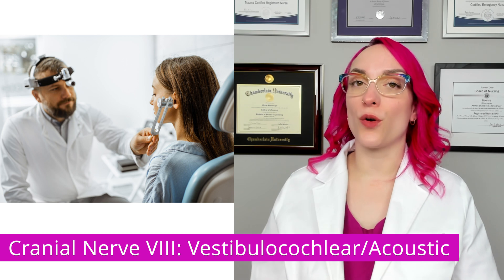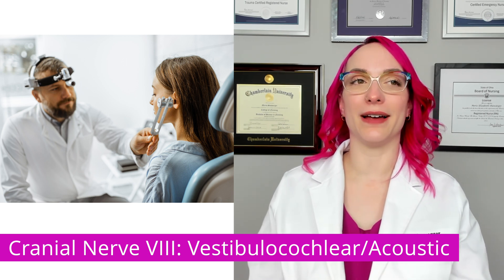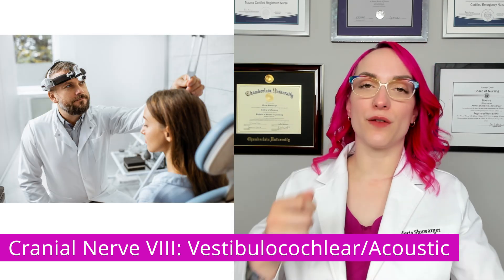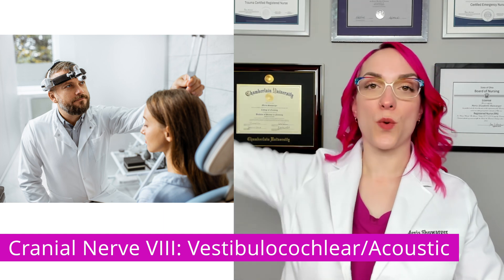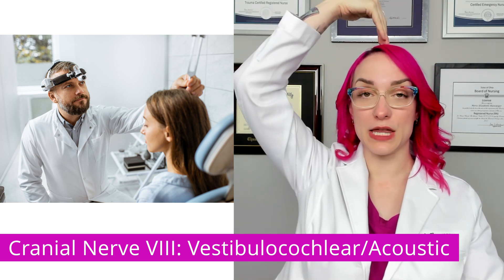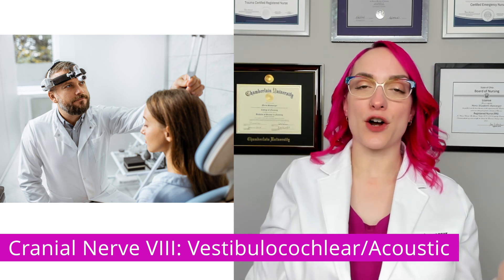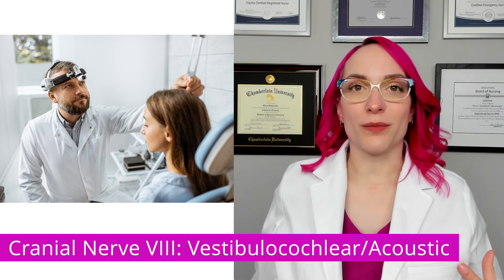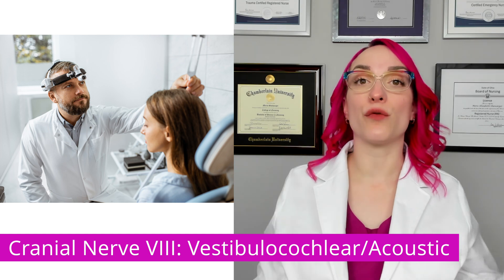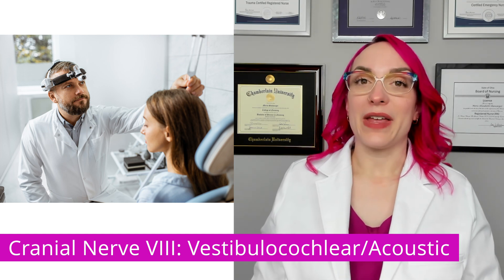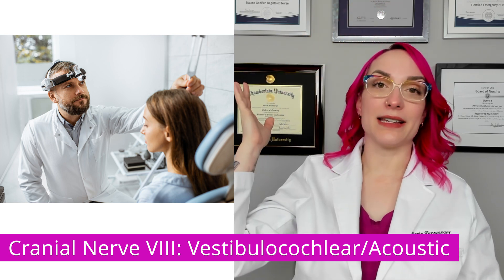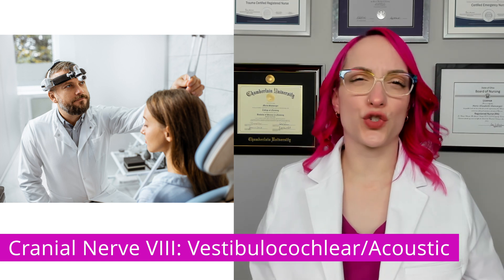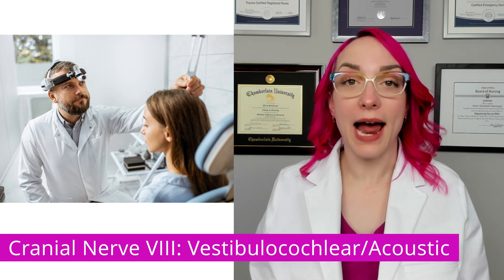Now we can use that same tuning fork to assess a different type of hearing with the Weber test. For the Weber test, we're going to strike that tuning fork and instead of placing it on the mastoid process, we're going to place it directly on the center of the head, right in the midline. What we expect is that our patient should be able to hear through bone conduction the same volume and same intensity of that sound on the right versus the left. If the patient doesn't hear it at all, hears it only in one ear, or hears it stronger in one ear versus the other, those would all be abnormal findings.